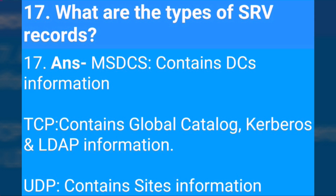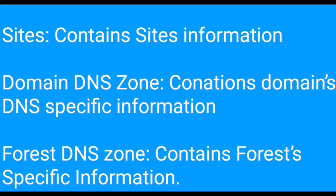What are the types of SRV records? _msdcs contains DC information; _tcp contains Global Catalog, Kerberos, and LDAP information; _udp contains site information; _sites contains site information; _domains DNS zone contains domain-specific DNS information; and _ForestDnsZones contains forest-specific information.